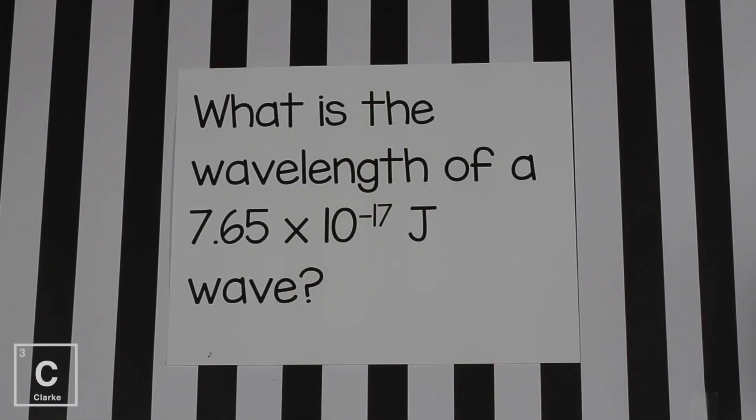This next example is a tad bit more involved. We're going to take two formulas and merge them together. But it's still going to be a breeze. Let's go ahead and give that one a try. This example is a little bit more complex because it says, what is the wavelength of a 7.65 times 10 to the negative 17 joule wave? Let's look at this problem closely.